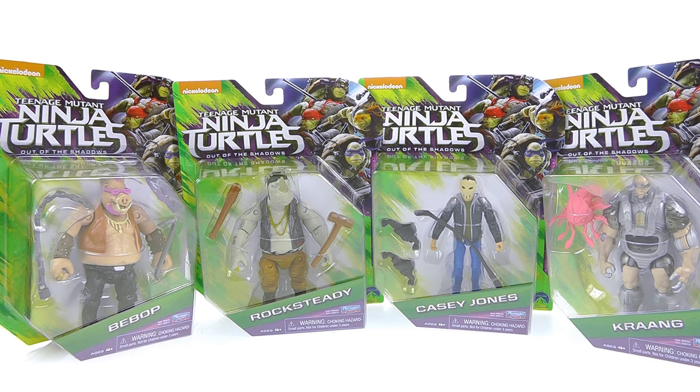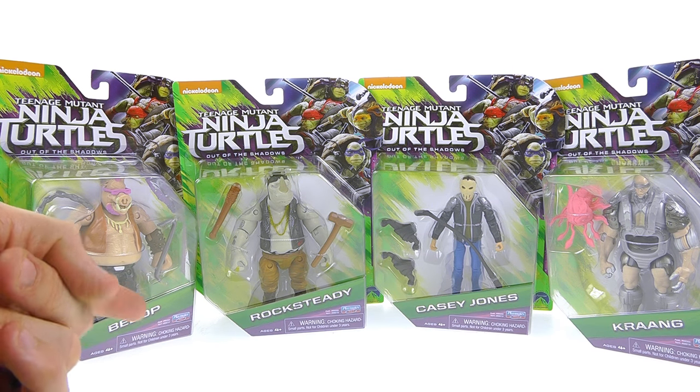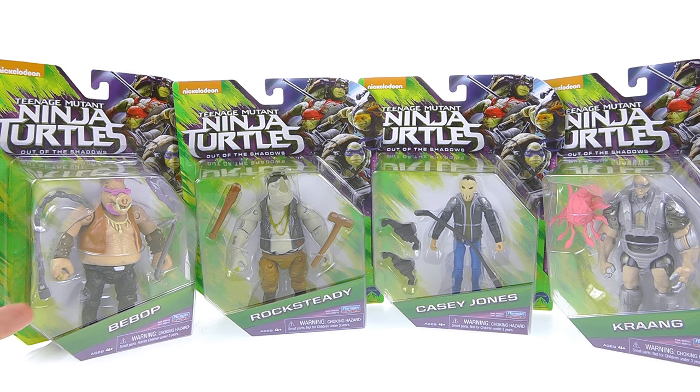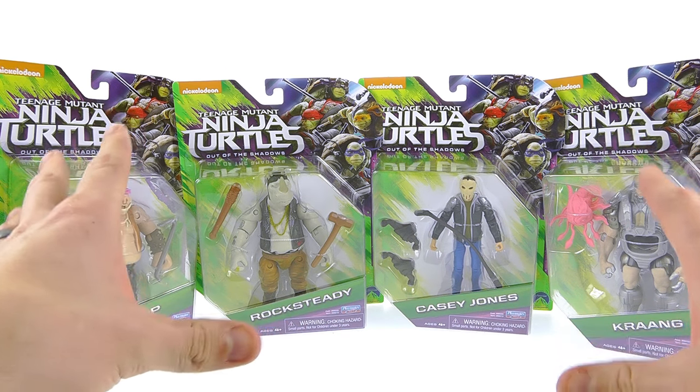Hey guys, thanks for tuning in. This is Optibotamus coming at you with another video review. Today we're going to be taking a look at the new Teenage Mutant Ninja Turtles Out of the Shadows figures: Bebop, Rocksteady, Casey Jones, and Krang. These are brand new characters in the upcoming film, so I figured I'd take a look at them all kind of in one video here.